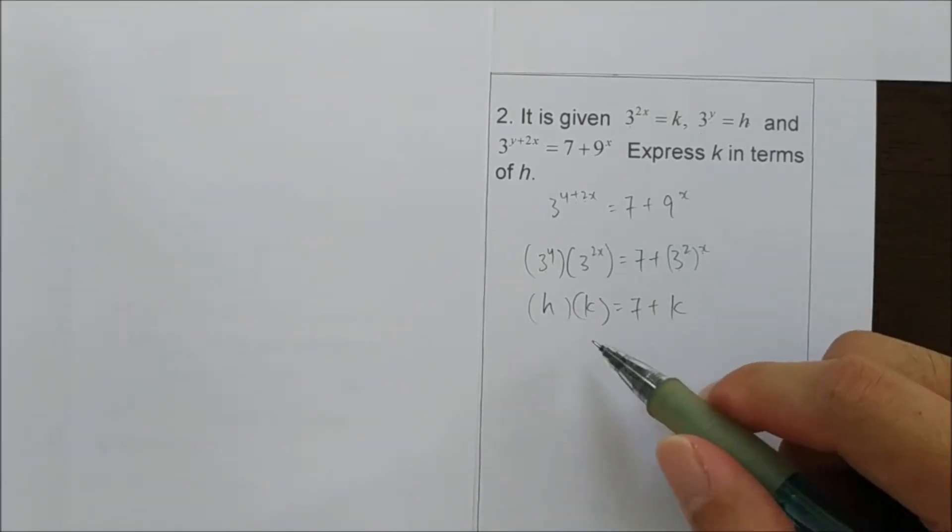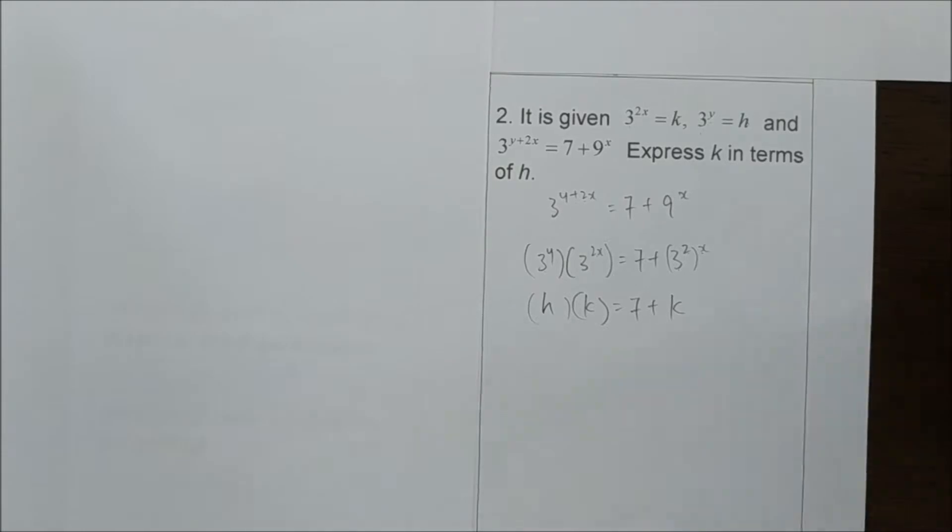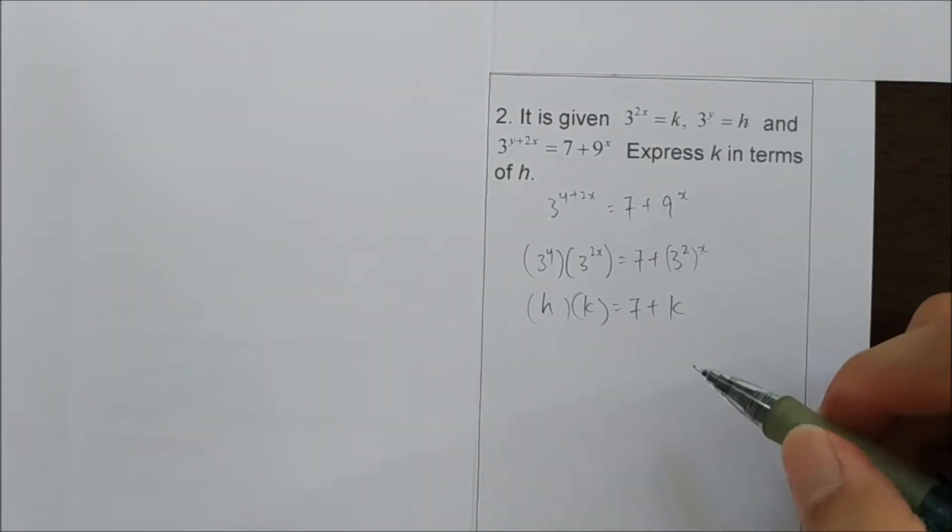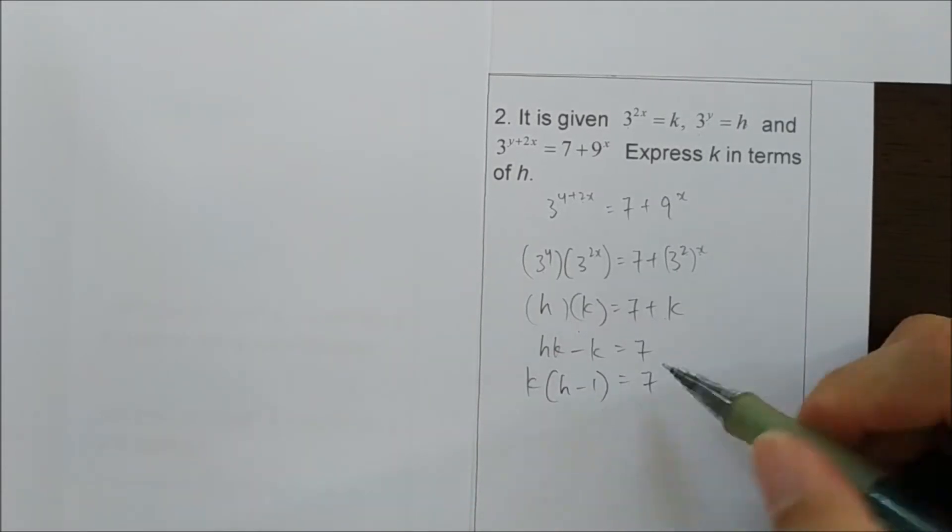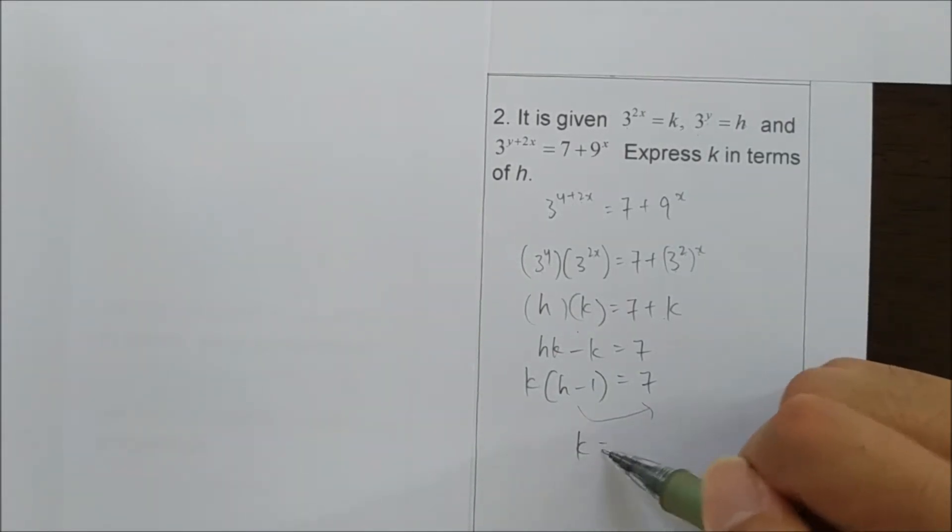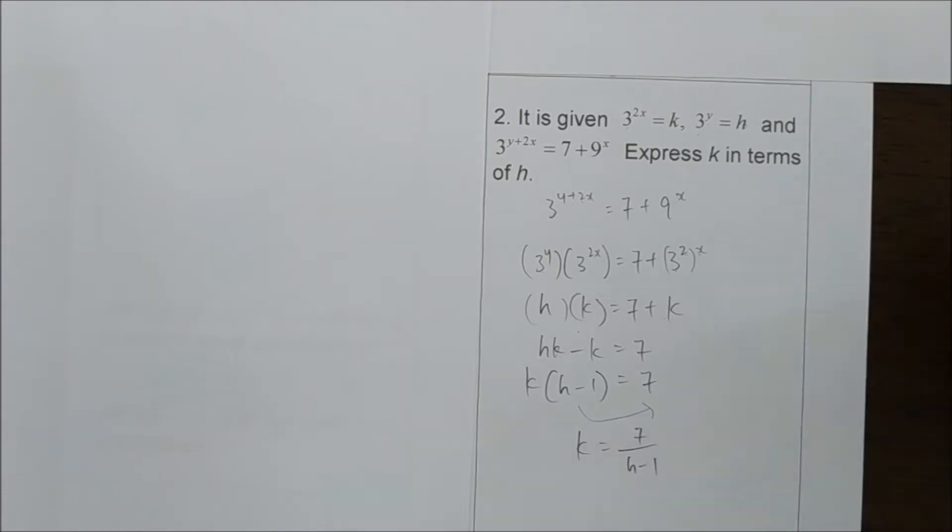Now we just need to arrange the equation to express k in terms of h. So the subject k equals 7 over h minus 1.